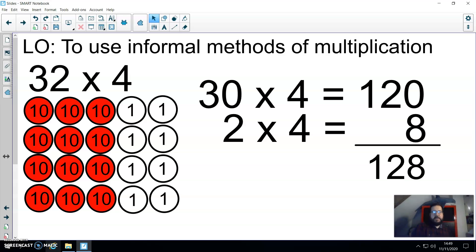The other way we looked at was just to partition the numbers without an array. So again, 32 gets broken down into 30 and 2, both of which are multiplied by the multiplier of 4. 30 times 4 is 120, 2 times 4 is 8. We add the answers together to make 128.